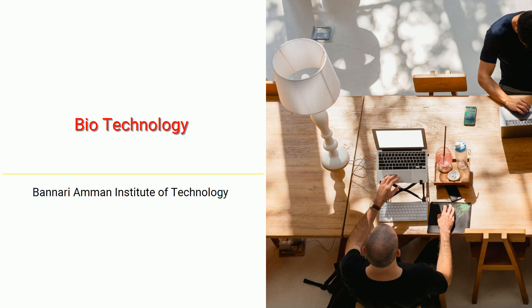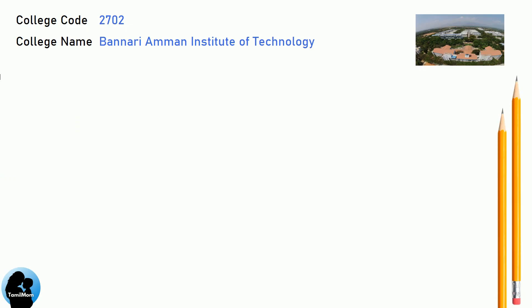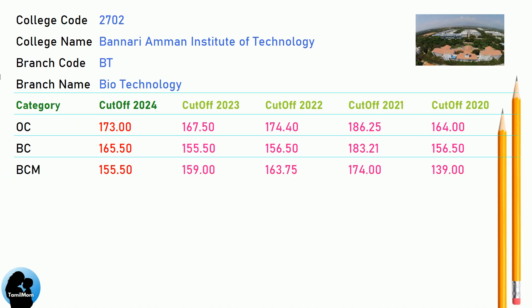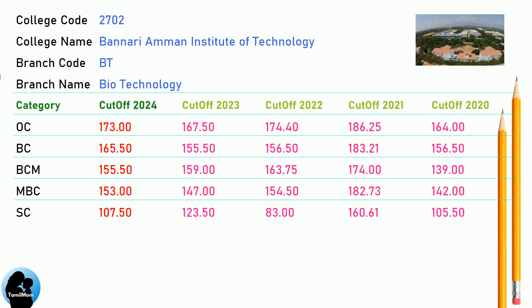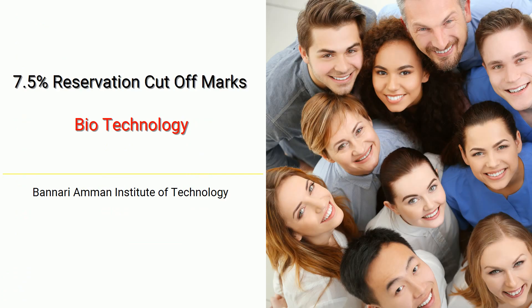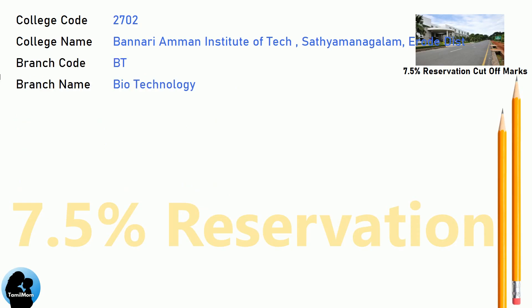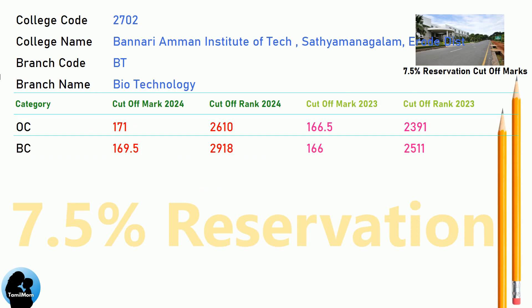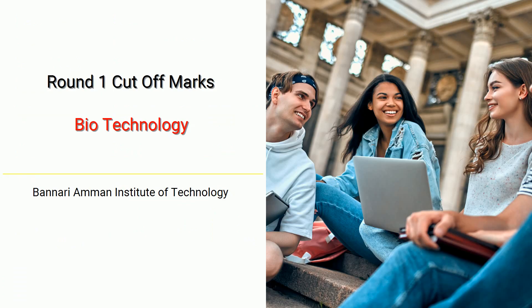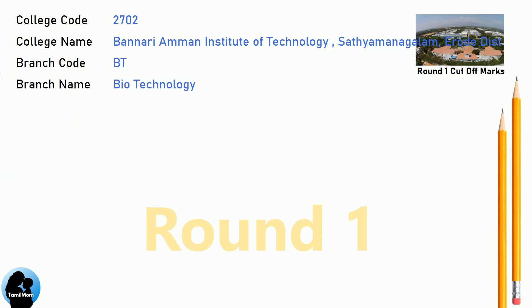DNA Cut-Off for Banari Amman Institute of Technology in Biotechnology. DNA 7.5 Reservation Cut-Off and Round 1 Cut-Off for Banari Amman Institute of Technology in Biotechnology.